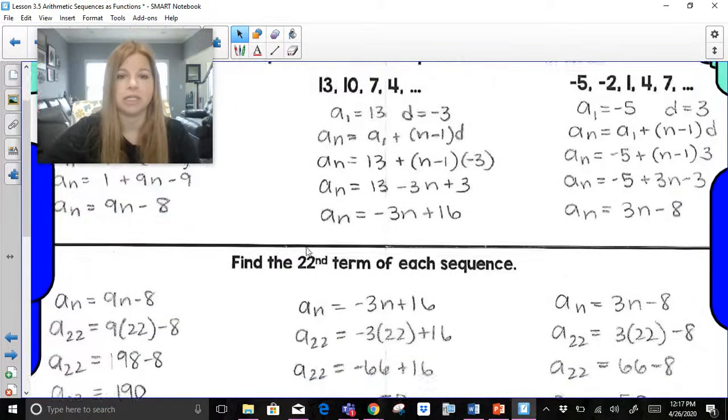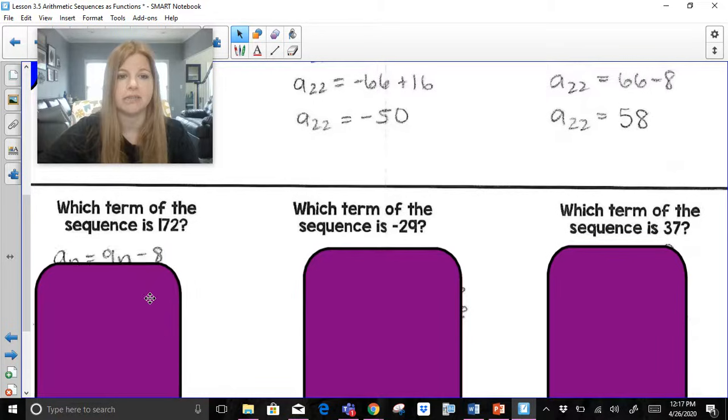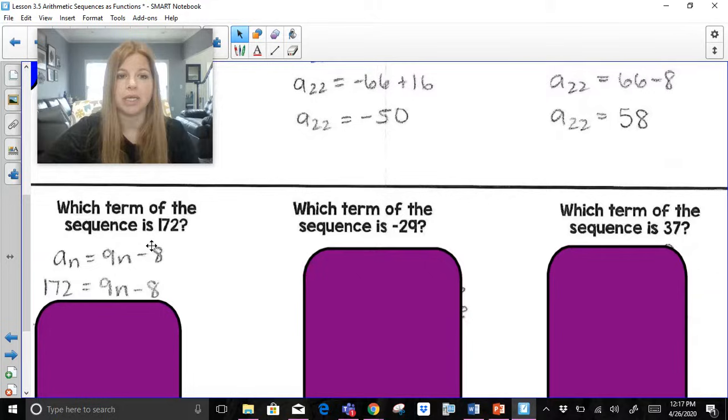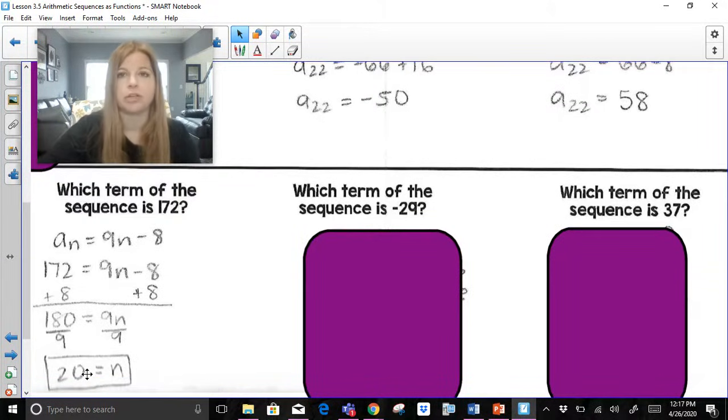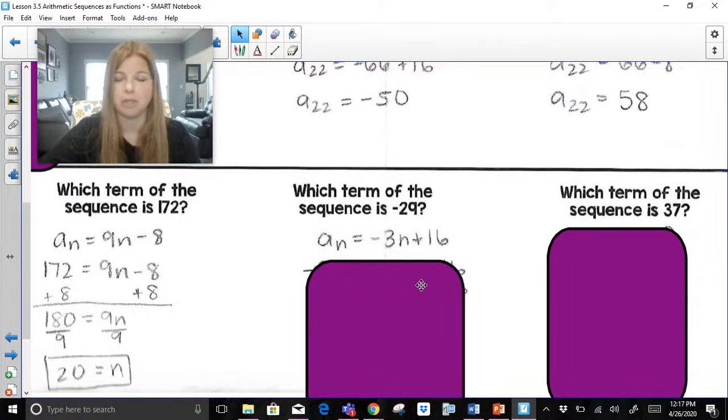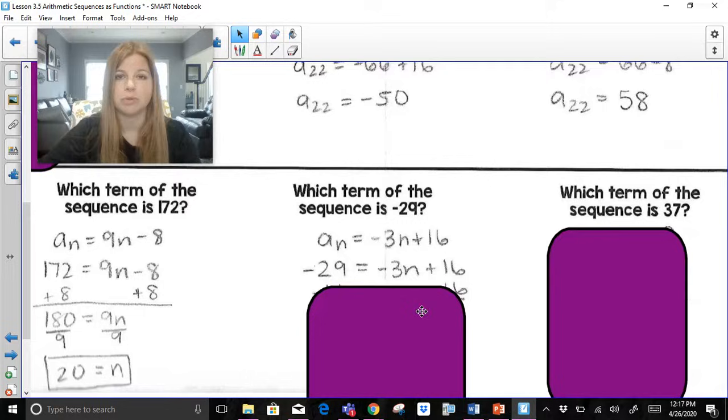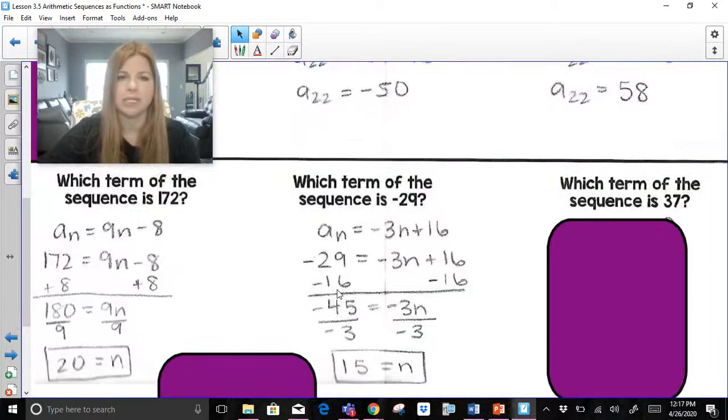So if I take a look here and I show you, and I said to you which term of the sequence is 172, and let's say I had this formula that I created from above, I would then plug in 172 in for a sub n, and then solve for n, and I would learn that 172 is actually the 20th term of that sequence. Okay? Again, which term of the sequence is negative 29? I would take that formula that we created, plug in negative 29 in for a sub n, and then solve. The solving point at this point is very easy for us because we've already dealt with our equations.